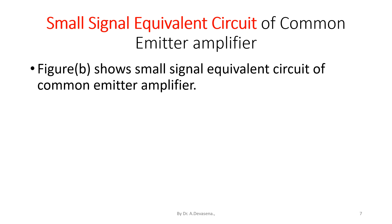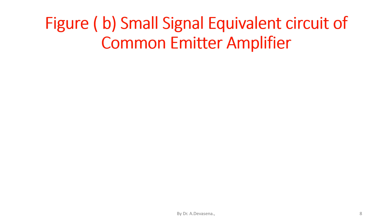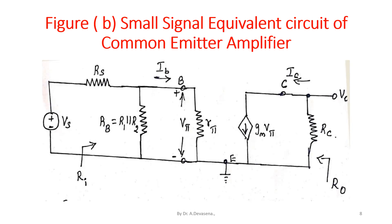Figure B shows the small signal equivalent circuit of the common emitter amplifier. For AC analysis, the capacitors are assumed to be short circuit and DC sources are shorted. In this diagram, the BJT is replaced by a hybrid pi model. The input is applied to the base terminal and the output is obtained at the collector terminal. All capacitors are considered short circuited and DC sources are also short circuited.